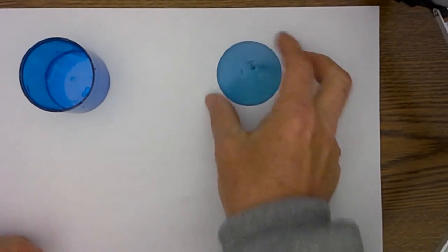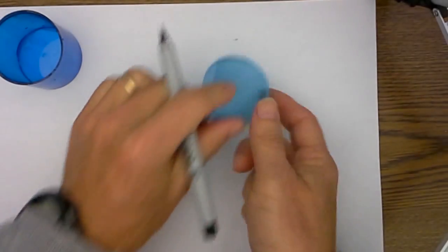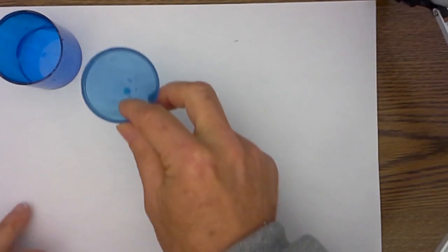Hello, welcome to Moo Moo Math. What I would like to do today is do a demonstration in which I show that the volume of a cone is one third that of a cylinder.